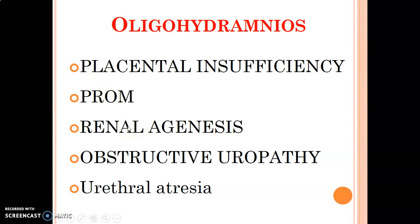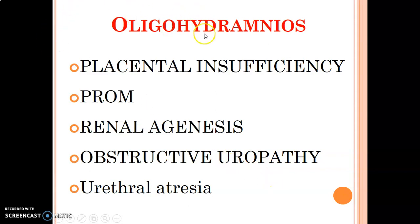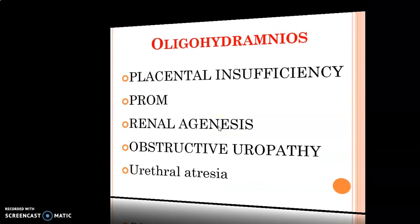Since the fetus urinates to produce part of the fluid, renal agenesis — where the kidneys have not developed well — causes oligohydramnios. When the kidneys are present and producing urine but the ureters are obstructed, as in obstructive uropathy, urine cannot reach the amniotic cavity. Urethral atresia, obstruction at the urethra, similarly causes oligohydramnios because urine cannot pass into the amniotic cavity.